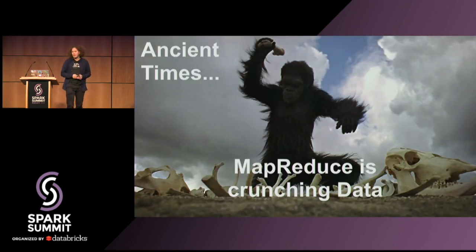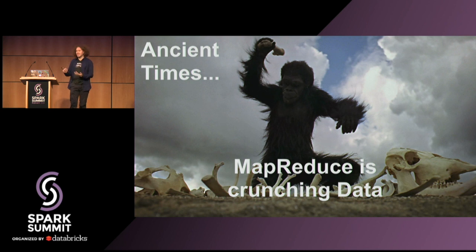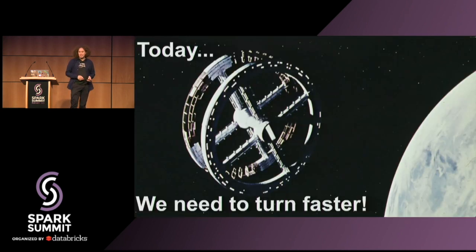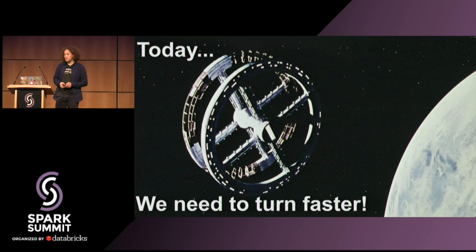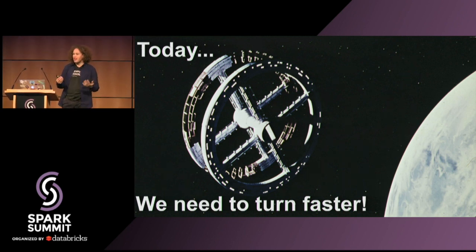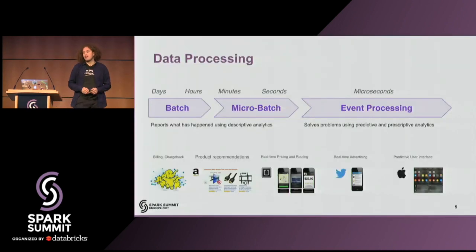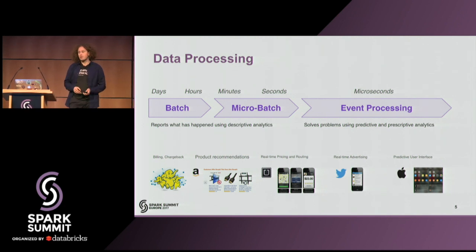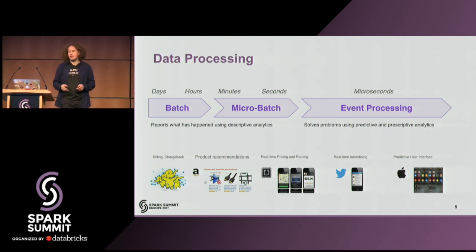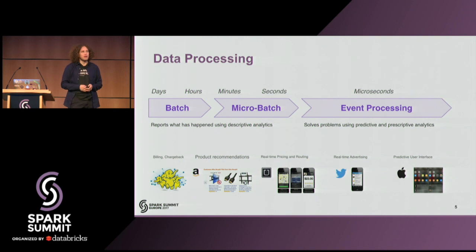In ancient times, it was actually all very simple. Like 10 years ago, we only had MapReduce around, and people just had a big Hadoop cluster standing somewhere in their basement, and there was no contention. Today, it's a little more challenging because we actually need to move faster. We have realized that the traditional Hadoop MapReduce is too slow for our purposes, so nowadays we're looking at other solutions, including Spark streaming.